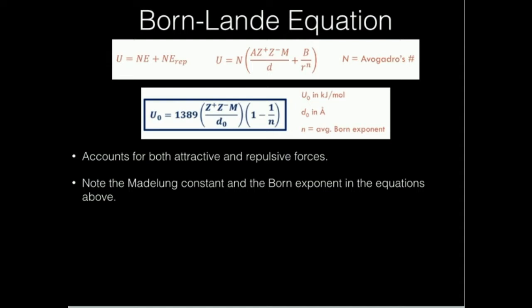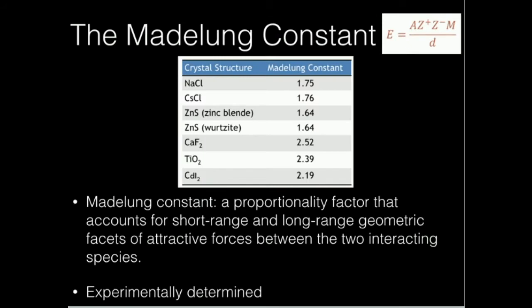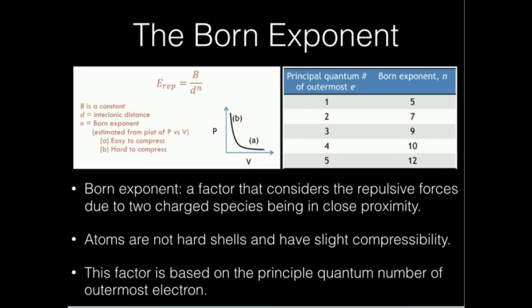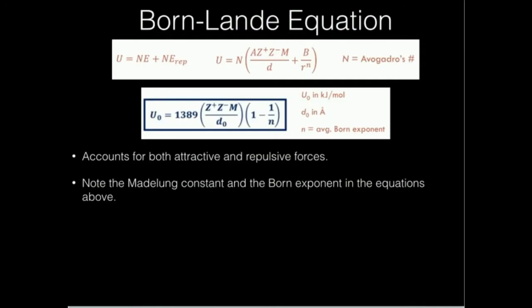The total lattice energy is going to be N — Avogadro's number — times the lattice energy due to attraction, plus Avogadro's number times the lattice energy due to repulsion. For the attraction, which was due to the Madelung constant, we had A·Z₊·Z₋ times M over D, plus the repulsive contribution from the Born exponent: B over D to the N. R or D is the interionic distance — the distance between the two ions in the lattice. N is the Born exponent, and M is the Madelung constant. This right here is the Born-Landé equation.